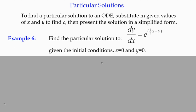So here's example six. It says find a particular solution to this equation: dy/dx equals e to the half x minus y. Now if we adjust that we could get a general solution, but we're given the initial conditions.